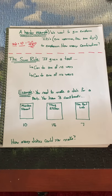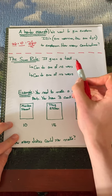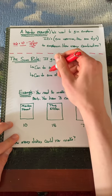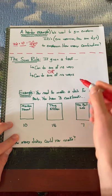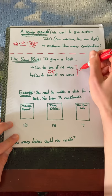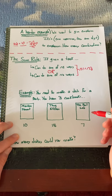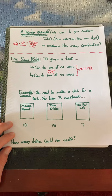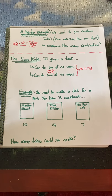Now let's go over the sum rule. The sum rule states that if we're given a task and we can do the task one of n1 ways or one of n2 ways, then there are n1 plus n2 ways to do the task. Again, notice the keyword 'or' — when you see that keyword you're going to want to be thinking sum rule.